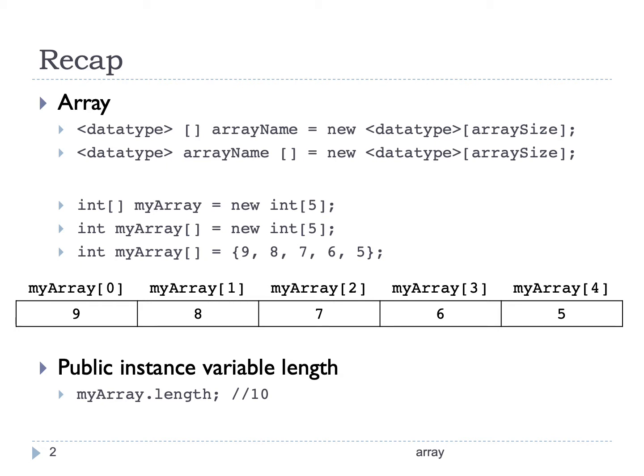To initialize the values when we declare it, we can use the braces with the values separated by comma. Otherwise, we can refer to the index number and assign the value. Also, to get the size of the array, we can use the instance variable called length.